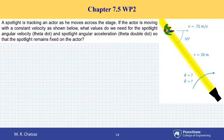A spotlight is tracking an actor as he moves across the stage to the right with a constant velocity in the horizontal direction along the x-axis. The question is, what values do we need for angular velocity theta dot and angular acceleration theta double dot of the spotlight so that it remains fixed on the actor as he moves with the given velocity?